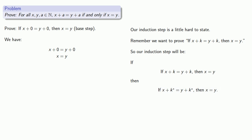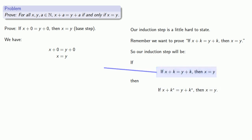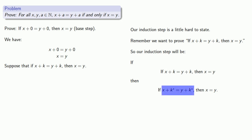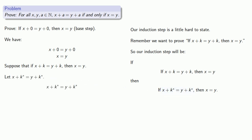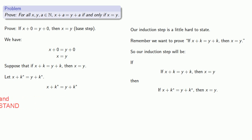We can always assume the antecedent of the conditional we're trying to prove. So we can assume that if x plus k equals y plus k, then x equals y. And since we're trying to prove a conditional, we can also assume its antecedent: let x plus k* equal y plus k*. We'd like to conclude that x is equal to y.